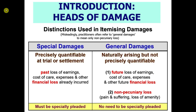That's in contrast to general damages — you don't have to specifically plead these; the judge will award them without you specifically asking. They naturally arise and are not precisely quantifiable. They involve future lost earnings, which are much more uncertain since you haven't had them yet. They also cover future cost of care, future expenses, and future financial loss — but importantly, also non-pecuniary loss: pain, suffering, and loss of amenity, which I'm going to focus on in this lecture.